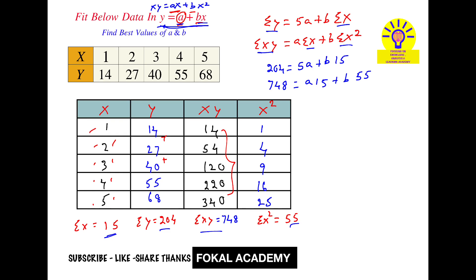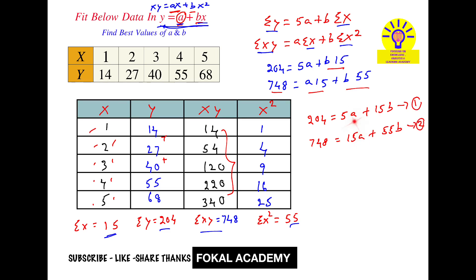So the two equations are: 204 equals 5a plus 15b — call this equation 1 — and 748 equals 15a plus 55b — call this equation 2. By solving these two equations, we get a equals 0 and b equals 13.6.